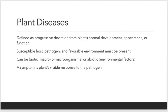As we look at plant diseases, plant disease is defined as a progressive deviation from a plant's normal development, appearance, or function. Basically a plant disease is just something that is different from the normal progression of that plant — whether it's a color or how the fruit's developing. Anything that's deviated from the original form of that plant is what we consider a plant disease. Some diseases are worse, some are very minor, and it really depends on what it means on the economic scale for the producer.